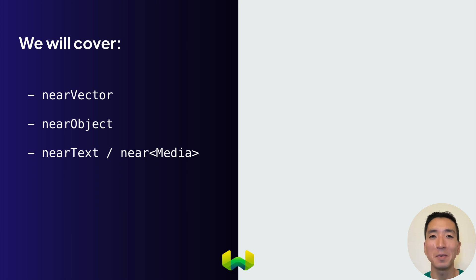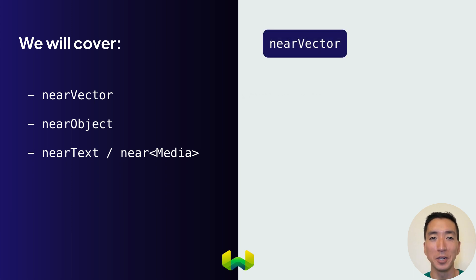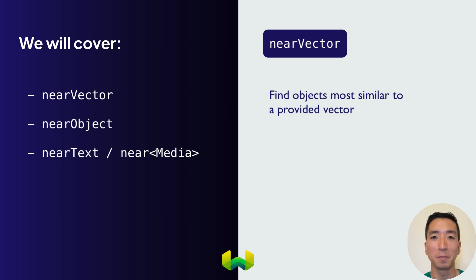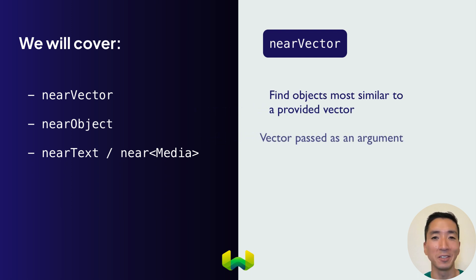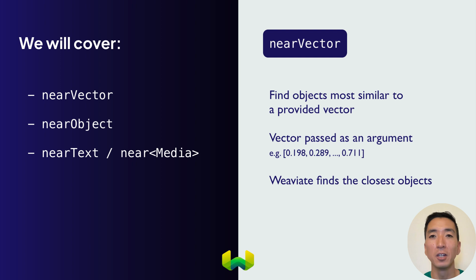First up is the near-vector parameter, which helps you find objects that are the most similar to a provided vector. You'll pass the vector — which is just a series of numbers — as an argument in your query, and Weaviate will carry out the vector search to return the closest matching objects based on their similarity.